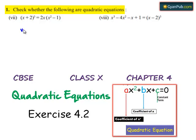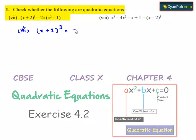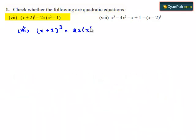Coming to the 7th problem, we have x plus 2 whole cube is equal to 2x times x square minus 1.